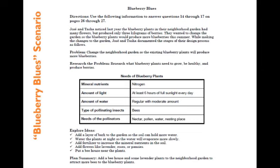Their research question was: what do the blueberry plants need to grow to be healthy and to produce berries? There is a list of the plants' needs with proposed answers, and a checklist under Explore Ideas. Research the Problem and Explore Ideas is really the heart of this kind of prompt. A plan summary is given at the bottom, outlining steps to solve the problem — they believe it has to do with bees and nearby plants attracting bees to increase pollination.